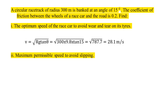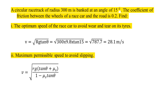The maximum permissible speed to avoid slipping uses the formula: v = √[Rg(tan θ + μs)/(1 − μs tan θ)].